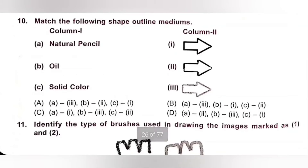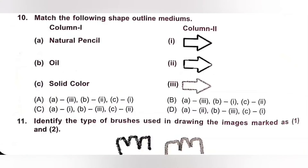Question 10: Match the following shape outline mediums — Column 1 with Column 2. Natural Pencil matches 3, Oil matches 2, Solid Color matches 1. So the answer is A3, B2, C1. Option A is the correct answer.